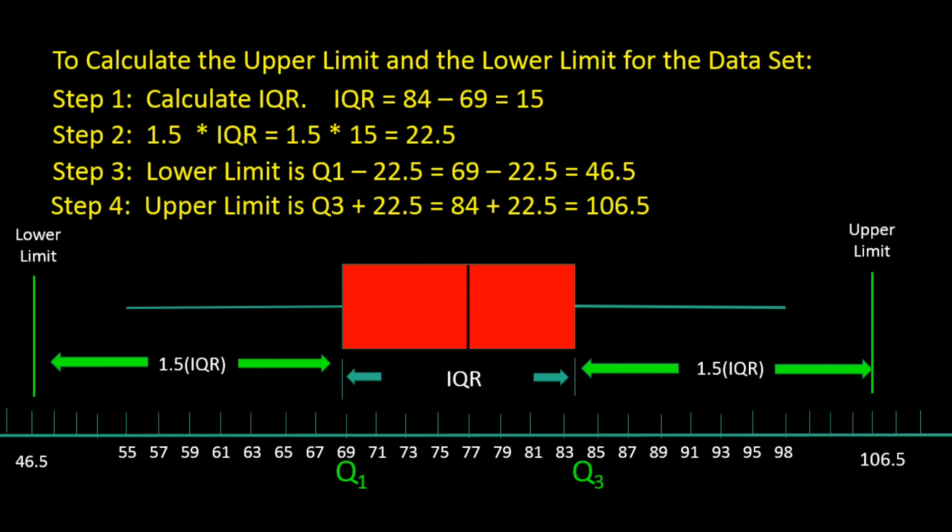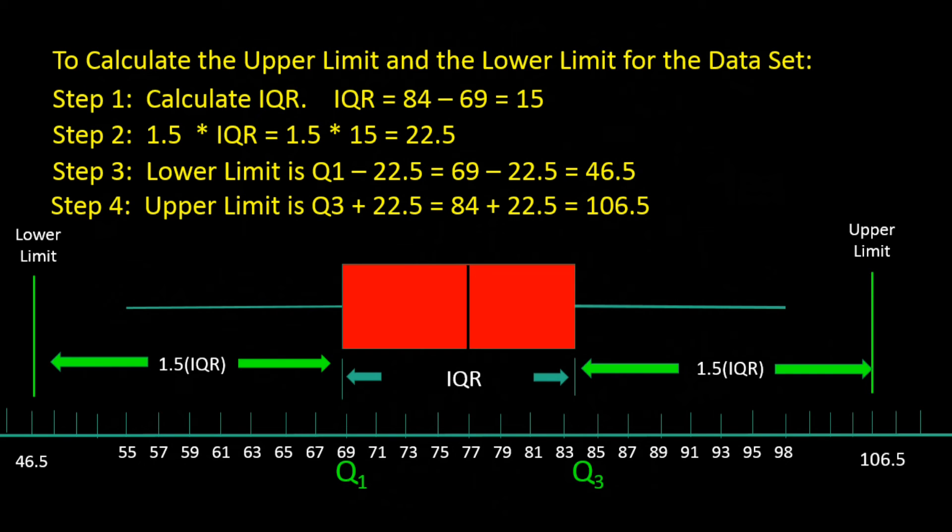To get the upper limit, we take the number in step 2, 22.5, and add Q3, 84, and we get 84 plus 22.5, or 106.5. So 106.5 is the upper limit.